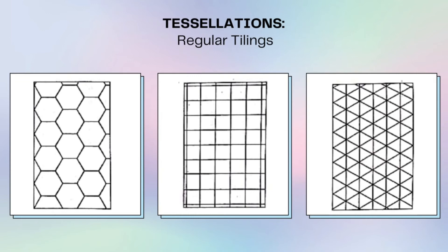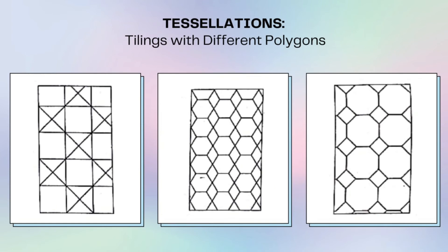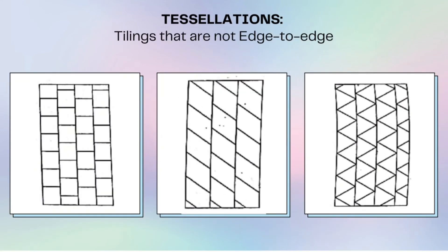The first example of tessellation is the regular tiling. As you can see, it looks normal and easy to make. The second is tiling with different polygons. As you can see, they are using two or more types of shapes or polygons. The last one is tiling that are not edge to edge.